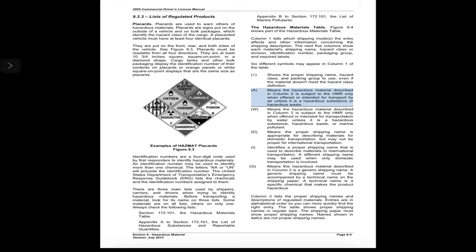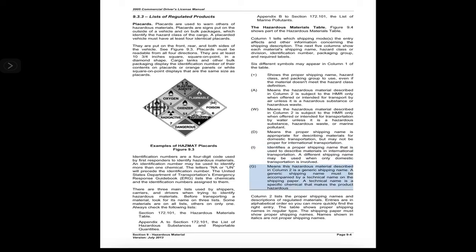Symbol 'A' means the hazardous material is subject to the HMR only when offered or intended for transport by air, unless it is a hazardous substance or hazardous waste. Symbol 'W' means the material is subject to the HMR only when offered for transportation by water, unless it is a hazardous substance, hazardous waste, or marine pollutant. Symbol 'D' means the proper shipping name is appropriate for domestic transportation but may not be proper for international transportation. Symbol 'I' identifies a proper shipping name used in international transportation.